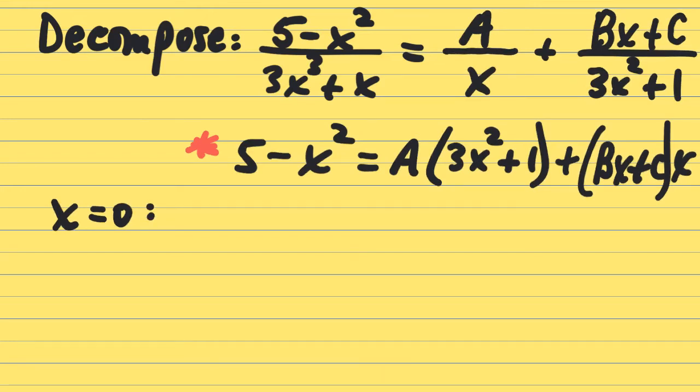Letting x be zero, five minus zero squared equals a times, plug zero in for x in the middle set of parentheses, three times zero squared plus one. In the last part of the problem, b times zero plus c times zero, all that goes to zero. So that gives us a equals five.